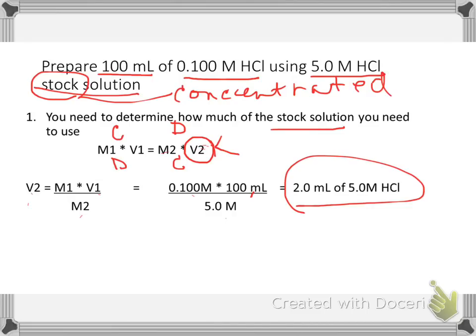Now, you might say, oh, that doesn't seem right. How can you do this with milliliters instead of liters? And the answer is because I've got milliliters and milliliters on both sides of this equation. If I were to change this to liters, I'd be milliliters over 1,000 on both sides. And as you can see, you can cancel out the 1,000 and you can still use milliliters.